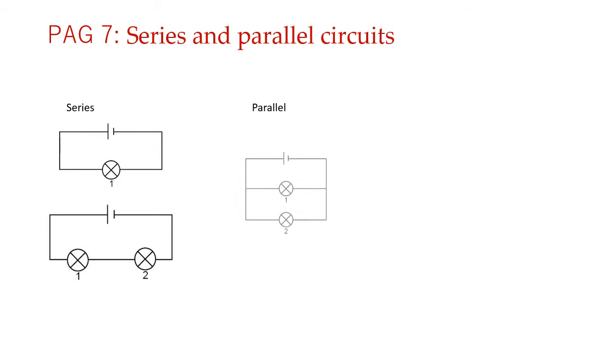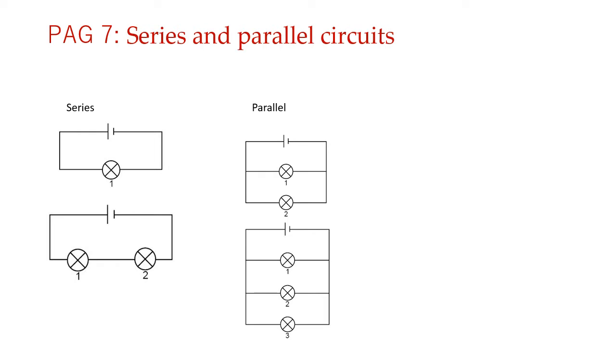PAG 7 is series and parallel circuits. So there is not much to explain in that. What you would have done here is you will have a bulb that is connected across a power supply. You will observe its brightness and then instead of having one bulb, you will connect two in series and then you will see what is happening to its brightness. The same you will do for a parallel circuit also.